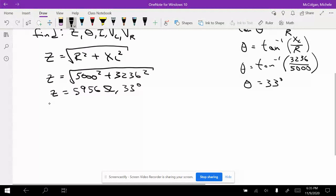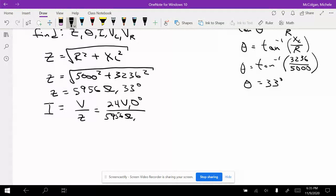So my current I is equal to V over Z, so that's going to be 24 volts at 0 degrees over 5,956 ohms at 33 degrees. So my I then is equal to 4 milliamps at negative 33 degrees.